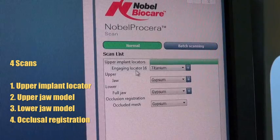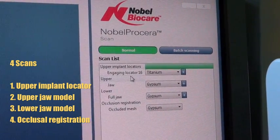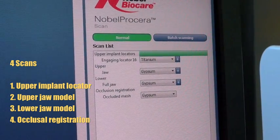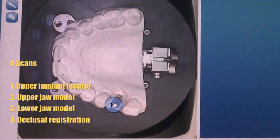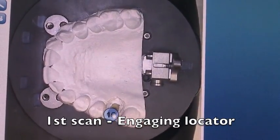During this scan we're going to do four scans: first an upper implant locator scan, number two an upper jaw model scan, number three a lower model scan, and then last an occlusal registration. So this will all be done in four different scans.